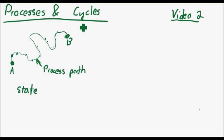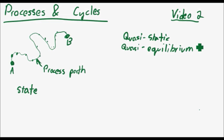So yeah, it goes through a path which helps you identify the behavior of whatever you're analyzing. So in thermodynamics there's something called quasi-static or quasi-equilibrium, which is used to define processes.